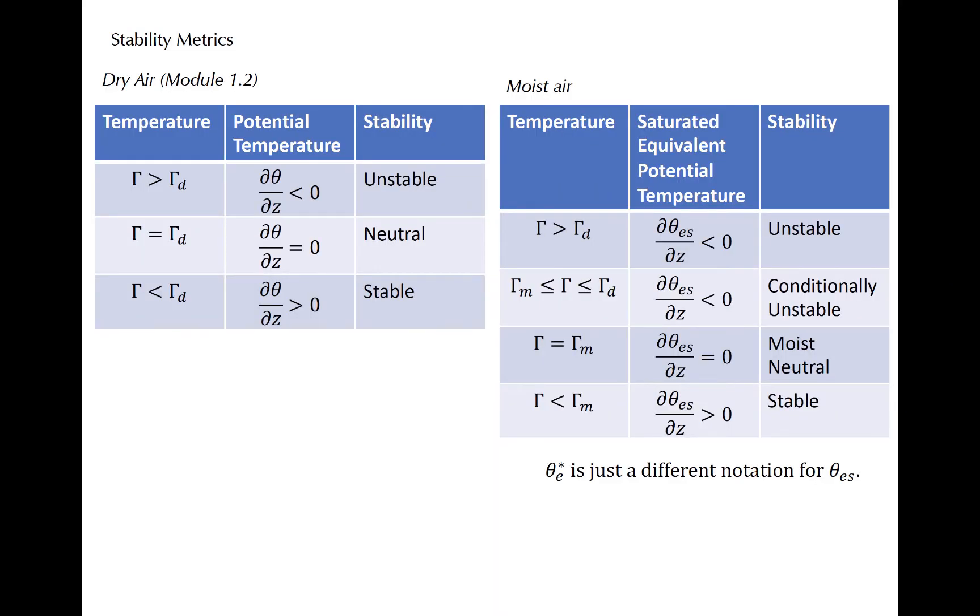For completely dry air, we can use vertical gradients of potential temperature to assess stability. However, for moist applications, we are concerned about the stability of moist but not necessarily saturated air. For this, we consider the vertical gradient of saturation equivalent potential temperature, which you may recall as a function of temperature and pressure.